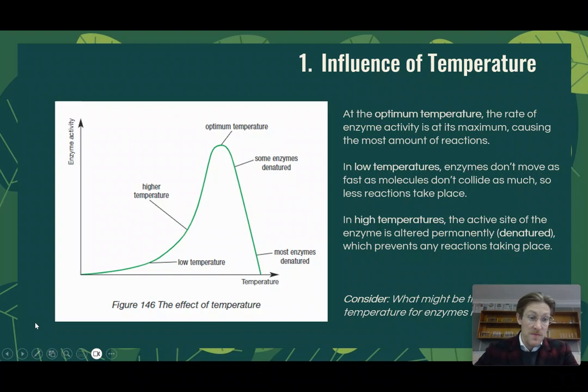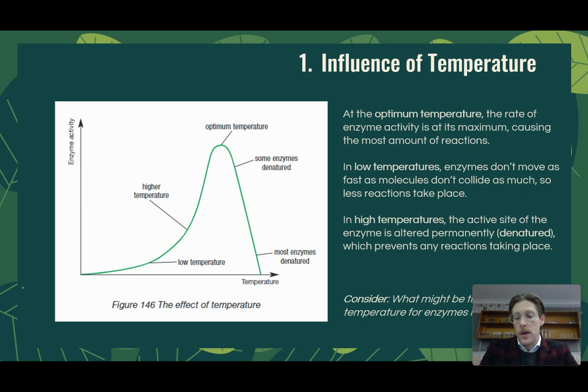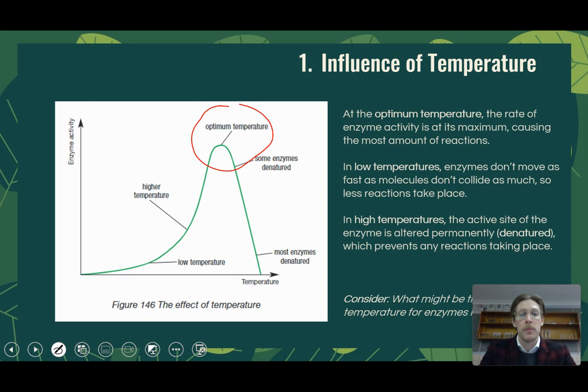Enzymes work best when in their optimal conditions. One of the first conditions we want to look at is temperature. Enzymes will help facilitate or break down substrates into multiple products, or combine multiple substrates into a single one. They are influenced by the environment they're in. Your body sits at around 37 degrees, and that temperature is consistent for having the most reactions — the optimal — at any given point in time. For enzymes that work within our body, the optimal temperature would be about 37 degrees.